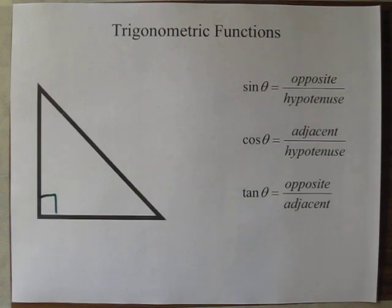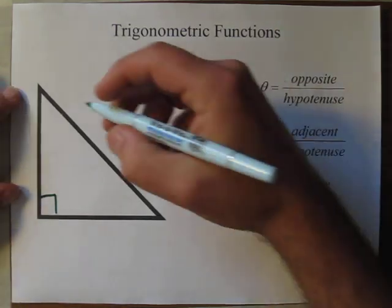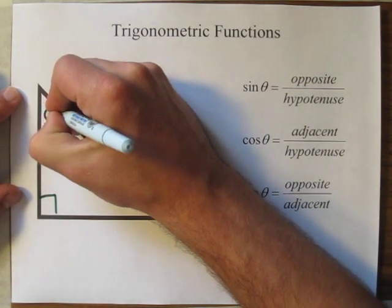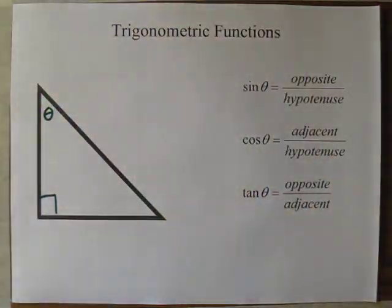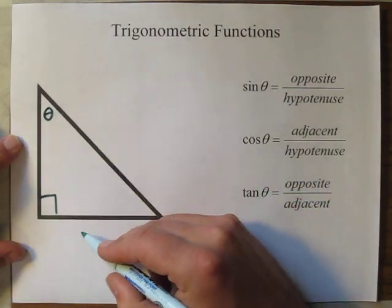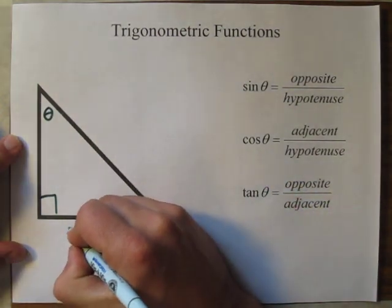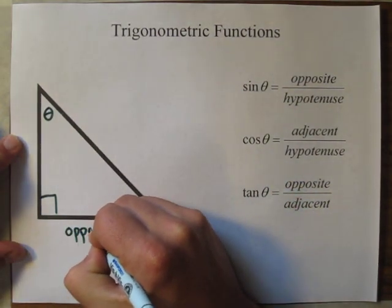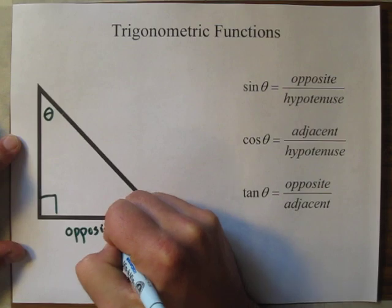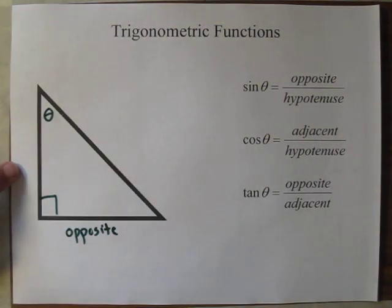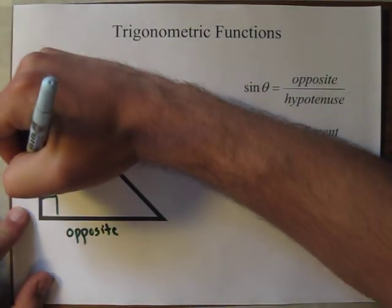The first thing we need to do is figure out what angle we're going to look at to plug into our trigonometric function. If we call this angle theta, then we can label the sides like this. Opposite angle theta is the opposite side. Adjacent to angle theta — so right next to — is the adjacent side.